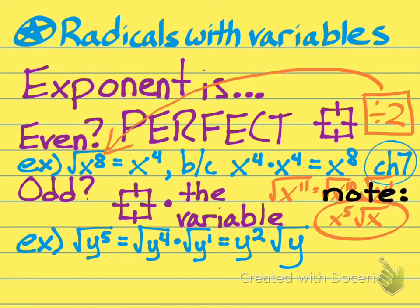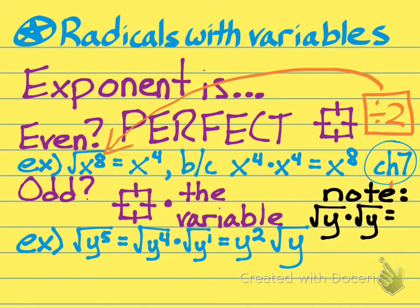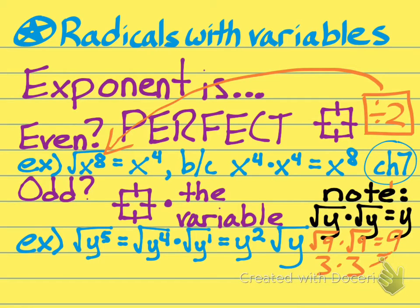Something to keep in mind: the square root of y times the square root of y is just y. If you take the square root of any number times the square root of that same number, you get that number back. For example, the square root of 9 times the square root of 9 equals 9 — because the square root of 9 is 3, and 3 times 3 equals 9. In general, anything that is being square rooted, if you multiply it by the same thing being square rooted, you get that same number back.